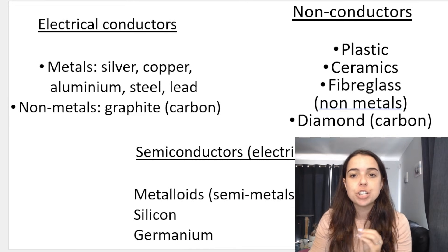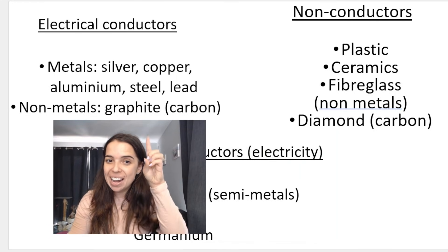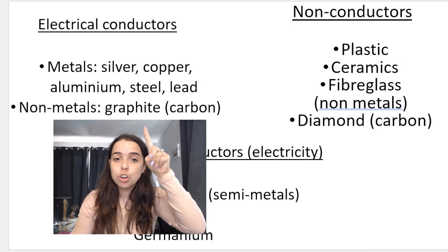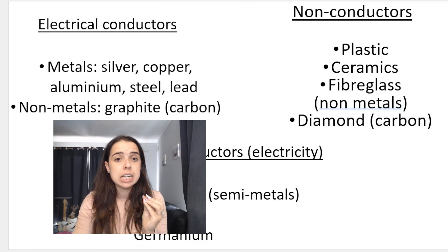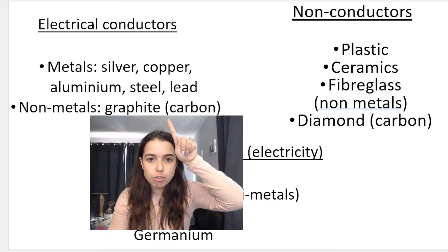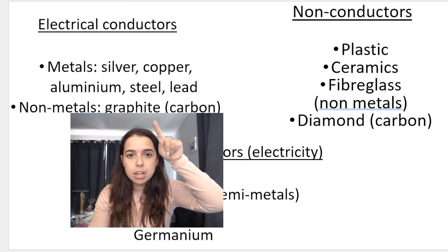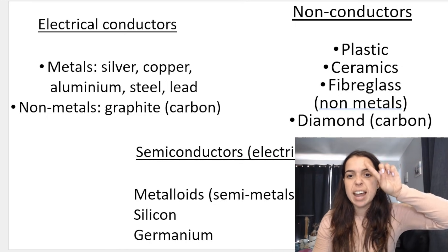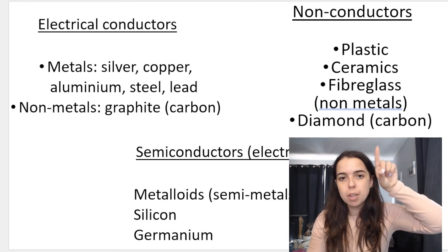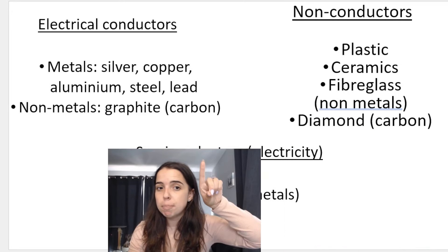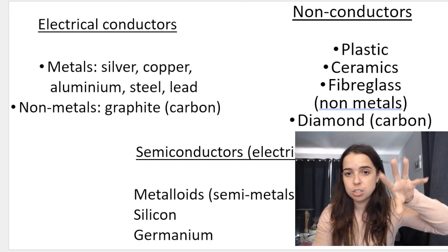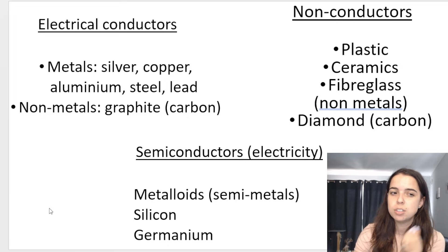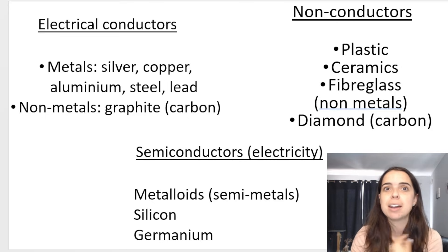Some examples: electrical conductors — once again, metals, which is why we use copper wires in circuits. A non-metal that is also a good conductor of electricity is graphite, which is made from carbon. Non-conductors of electricity include plastic, ceramics, fiberglass, and diamond. Now, diamond is also made of carbon — graphite and diamond are both made of carbon, but graphite is an electrical conductor while diamond is not. Then we've got semi-conductors: semi-metals such as silicon and germanium, which under certain circumstances allow current to flow through them, and under others they won't.